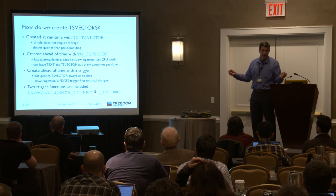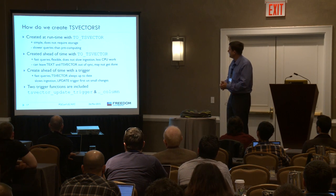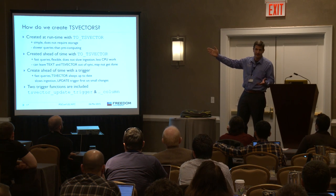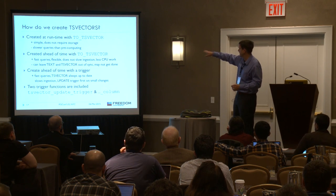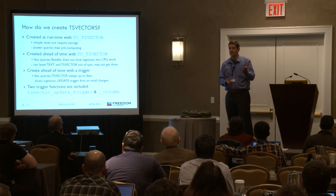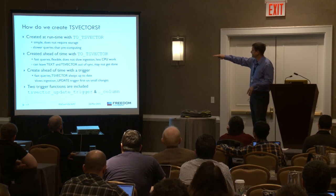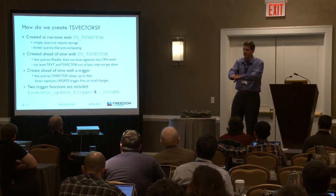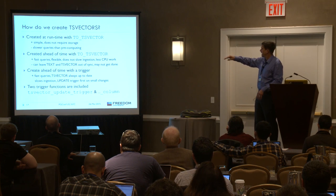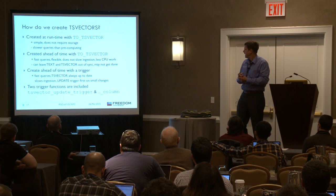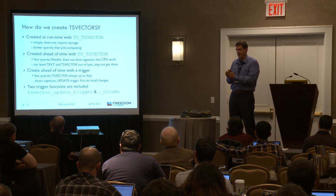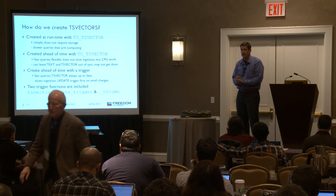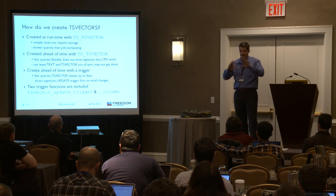I'm a consultant, so I have to say it depends. The simple way: you can create TS vectors at runtime — don't create them ahead of time. When you run it, use the to_tsvector function. It's simple, doesn't require any storage, but it's slower. You can also create them ahead of time with to_tsvector manually — that is fast and flexible, but it doesn't slow ingestion as a trigger would. The limitation of that is it is possible, if you manually update your indexes, to have the document and the TS vector out of sync. You can create them ahead of time with a trigger — fast and painless — but the trigger slows ingestion. There are two built-in triggers to maintain TS vectors that come with Postgres: tsvector_update_trigger and the associated column variant.